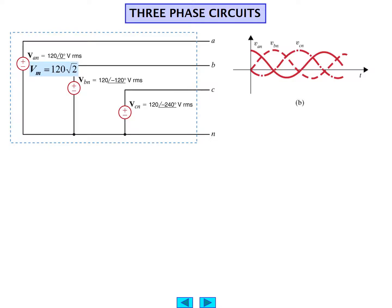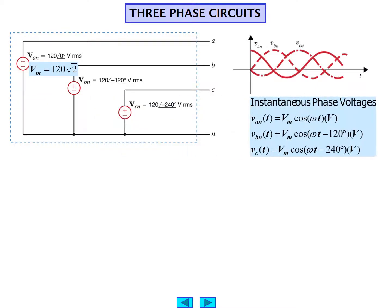We can write each of the voltages in terms of phasor relationships. V_m is 120 times the square root of 2, essentially. We can have the instantaneous phase voltages in terms of V_m. We've removed the RMS content by multiplying by the square root of 2. So 120 times the square root of 2 gives us the peak voltage, whereas 120 is the RMS voltage. The instantaneous phase voltages are given in the time domain: V_m times cosine omega t, or cosine omega t minus 120 degrees, or cosine omega t minus 240 degrees.